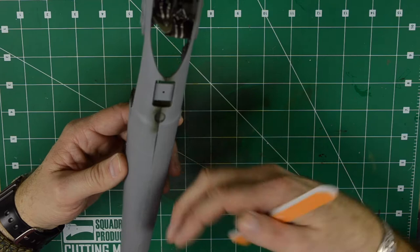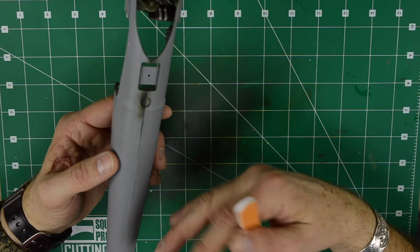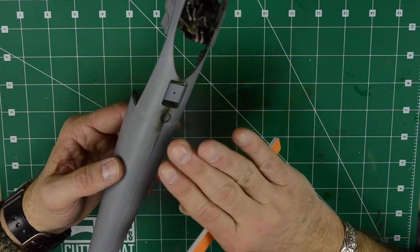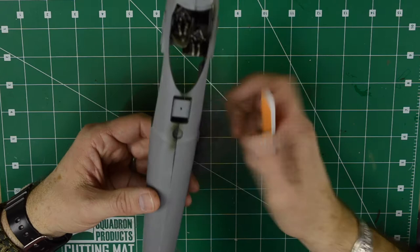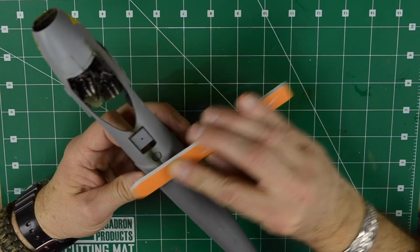I prefer to do that instead of using putty because superglue, once it gets hard, it's less porous. So when you do that and the superglue becomes dry, then once you sand it and you buff it, you'll have a lot smoother transition than using regular putty. So let's see what happens.